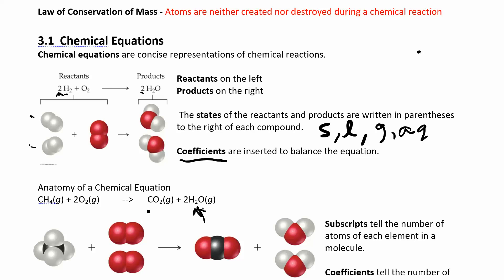Subscripts are the small numbers at the bottom of a formula — they tell you how many atoms you have in that particular molecule. In CH₄, I have one carbon and four hydrogens. Here I have one carbon and two oxygens. For water, I have two hydrogens and one oxygen for every one molecule of water. The coefficient in front means I have two of those molecules.